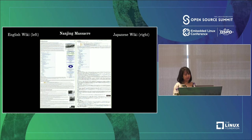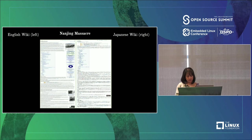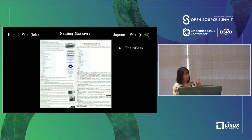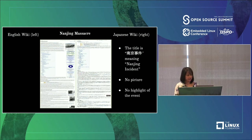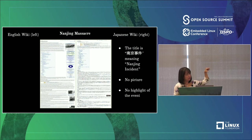The left shows the page about the Nanjing massacre on the English Wikipedia and the right shows the same topic on the Japanese Wikipedia. The title for the Japanese Wikipedia is actually 'Nankin Jiken,' meaning 'Nanjing incident,' instead of 'Nanjing massacre.' There's no picture of the massacre or events leading up to it, even though such pictures exist — as you can see on the English Wikipedia. There is also no info box, which appears on the right side of the English Wikipedia page.